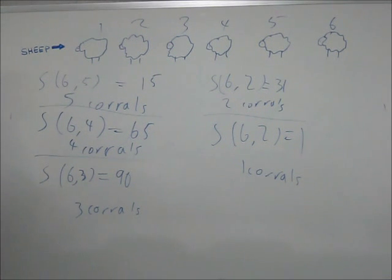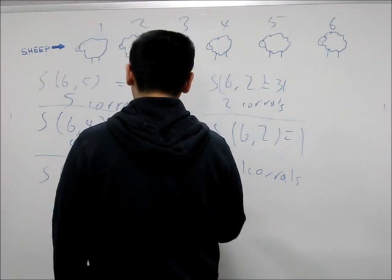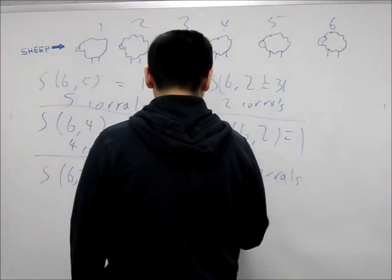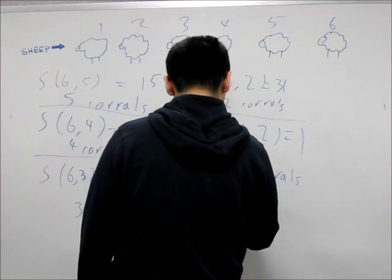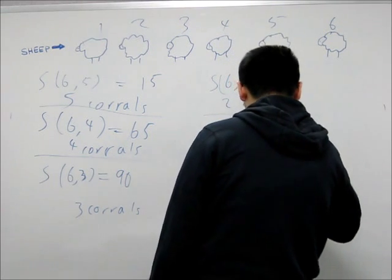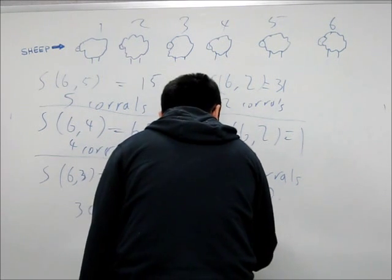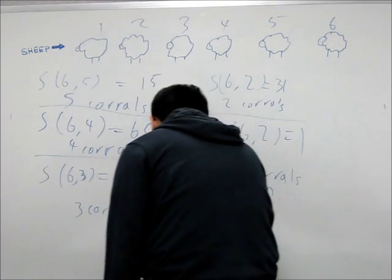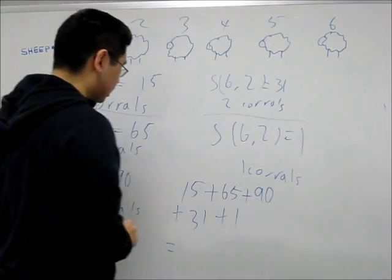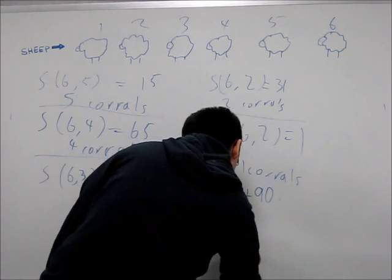So effectively, the number of ways we could put sheep in 5 corrals, and if we're allowed the corrals to be empty, it's actually just going to be 15 plus 65 plus 90 plus 31 plus 1. And if my math is right, this is going to be 202.